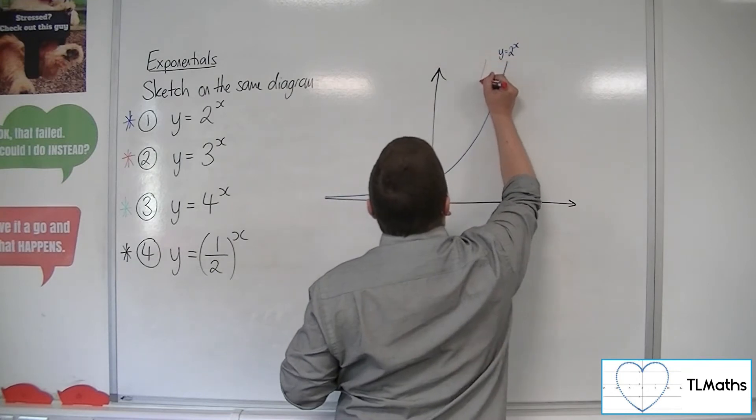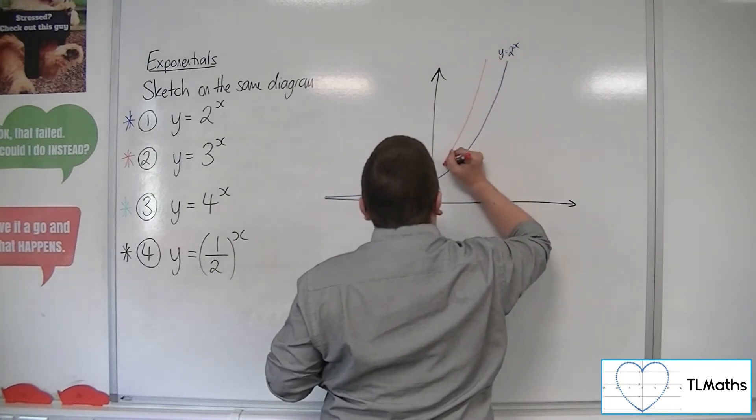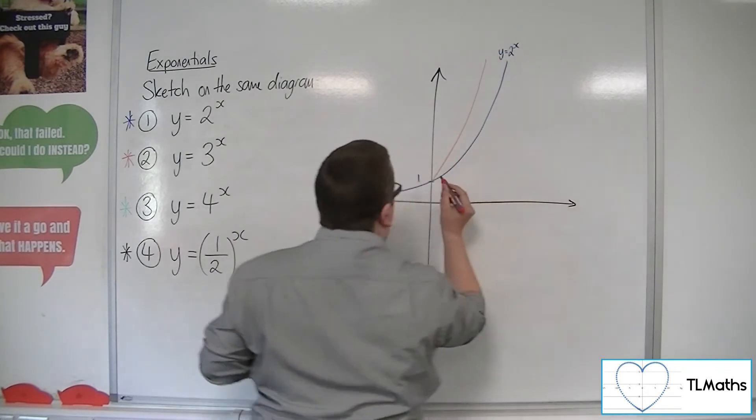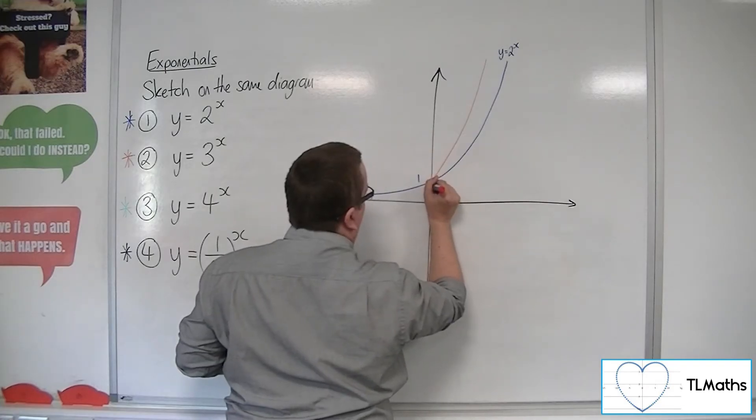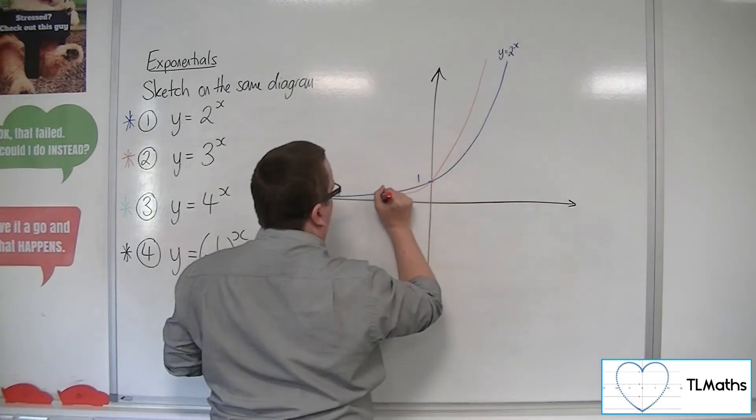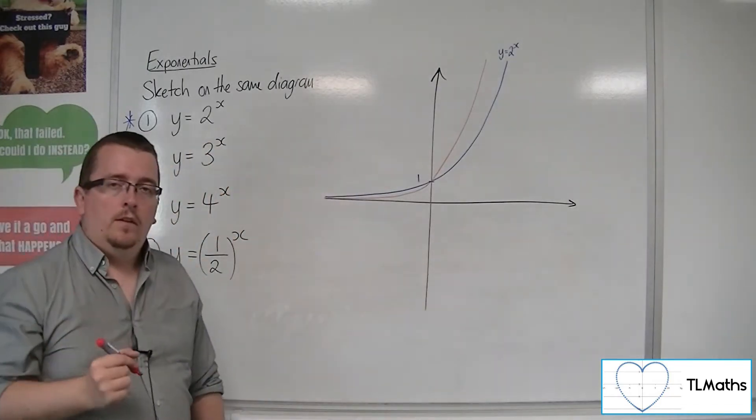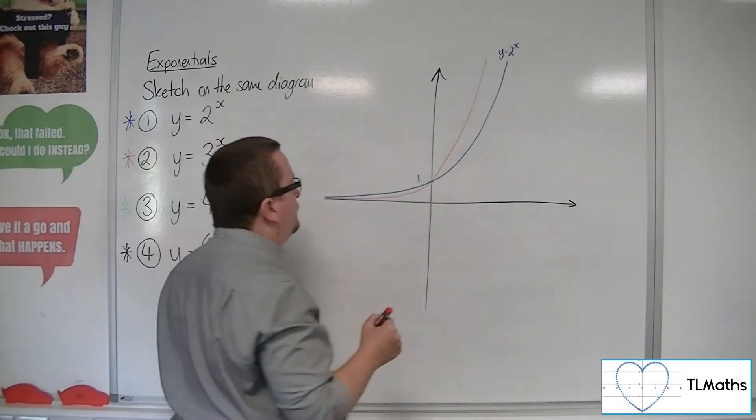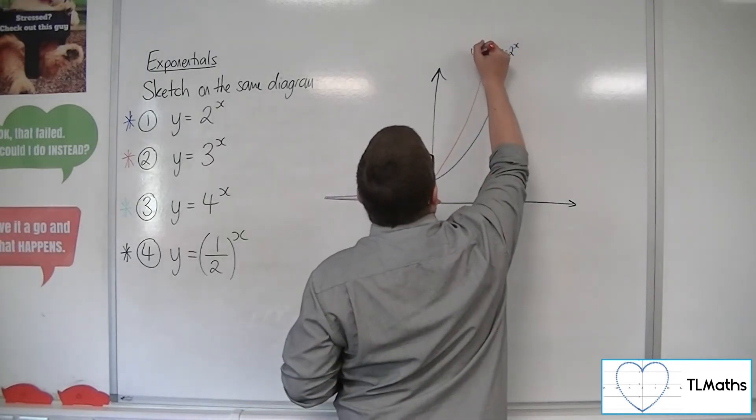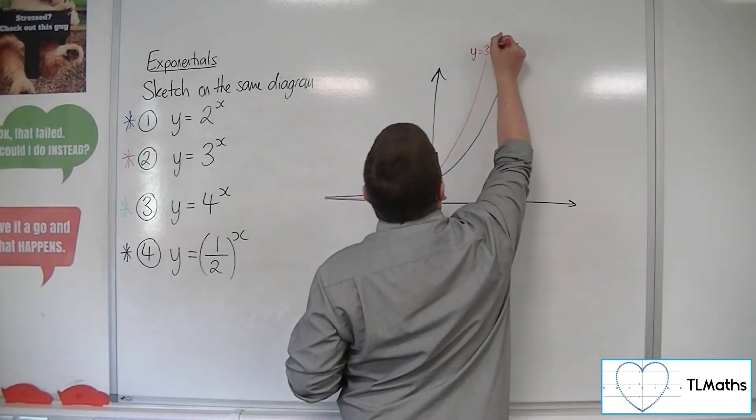So to represent that, we have to have a curve that goes through 1, but then is decreasing faster than the 2 to the x. So this would be y equals 3 to the x.